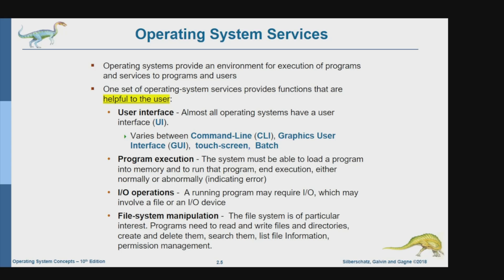Next we have program execution. The system must be able to load a program into memory and run that program, executing it until the end — either it runs smoothly inside the OS or sometimes it may have an error. For example, let's say we have Telegram as a program; we run it inside our operating system. Sometimes it can run smoothly, but under certain conditions it may have some errors.